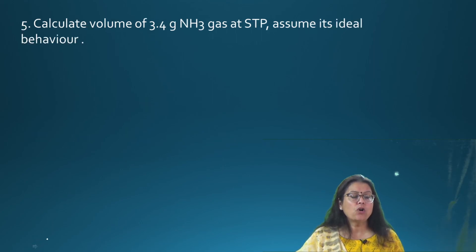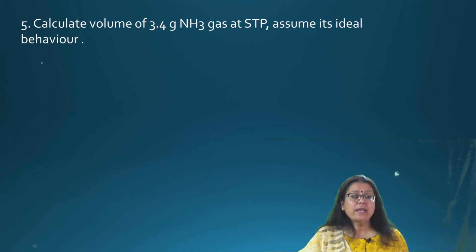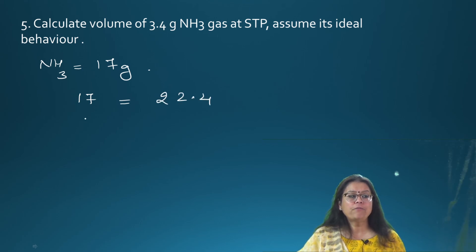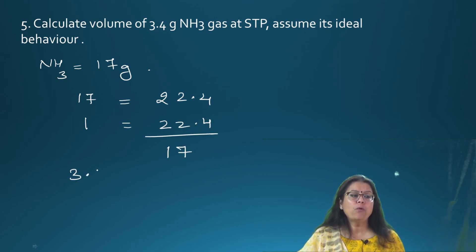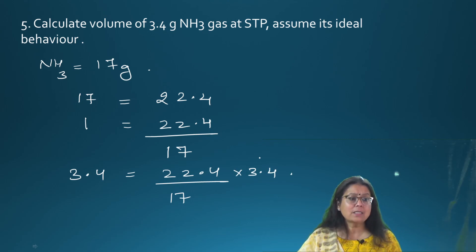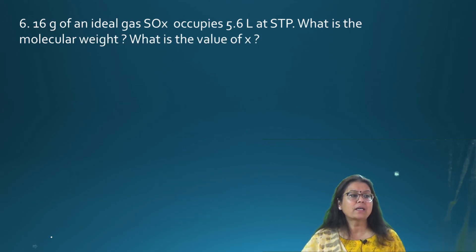Question 5: Calculate the volume of 3.4 grams of ammonia gas (NH₃) at STP. Molar mass of NH₃ is 17 grams. 17 grams occupies 22.4 liters. So 3.4 grams occupies (22.4 / 17) × 3.4 = 4.48 liters. Simple, no confusion anywhere.